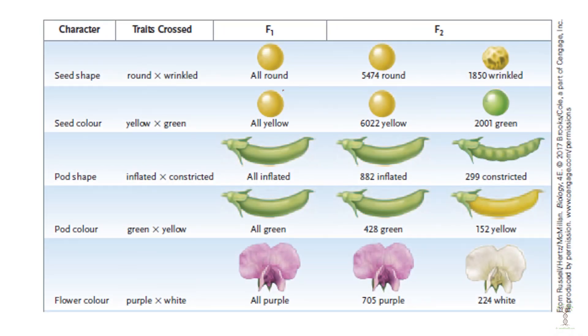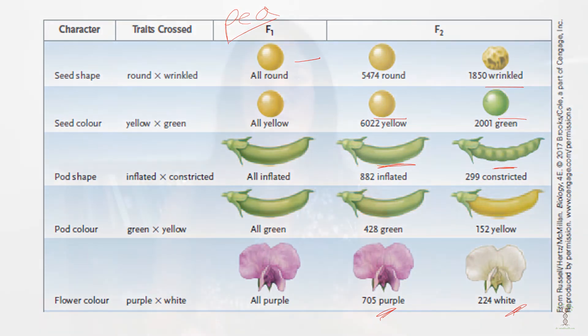In this slide you can see different pea plant phenotypes. Pea plants could be round or wrinkled, yellow or green, they could have inflated pods or constricted pods, they could have purple flowers or white flowers. These are examples of phenotypes. The genes that make up these phenotypes — that is the genotype. In this video we're going to focus on traits that are inherited in a dominant and recessive pattern.